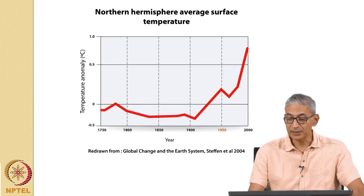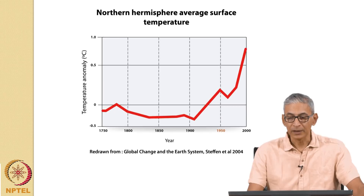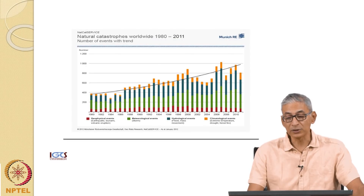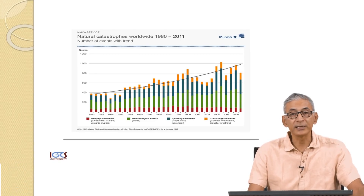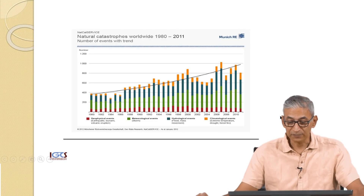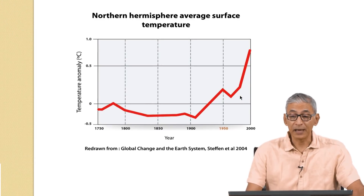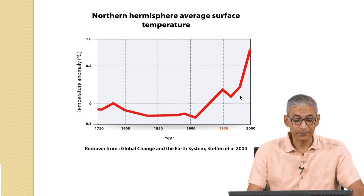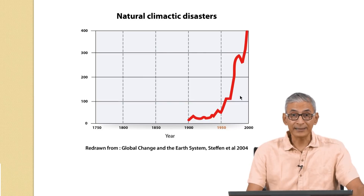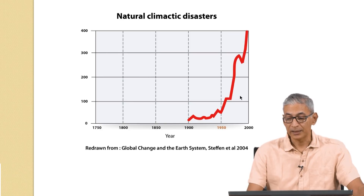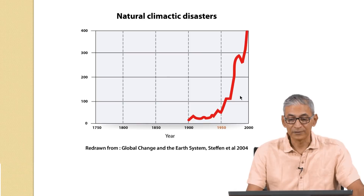Average surface temperatures have also been increasing quite rapidly in the last few decades. And if you look at natural catastrophes worldwide between 1980 and 2011, again you see a growing trend — much of this has to do with weather and climate-related events worldwide. The northern hemisphere's average surface temperature has gone up, also known as a temperature anomaly. Natural climatic disasters are on the rise, something not seen to the same extent in the first half of the 20th century as what was observed in the second half.